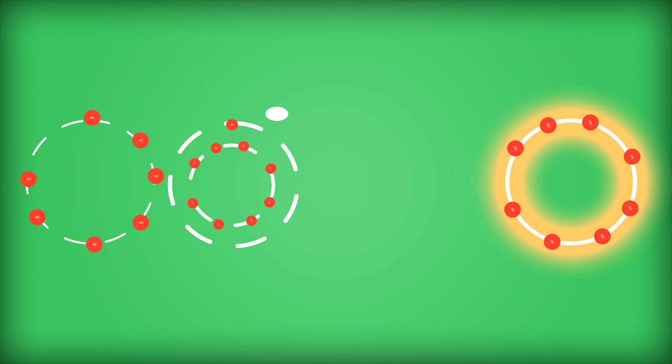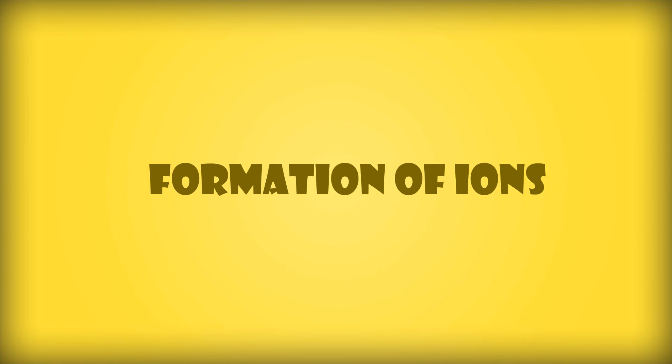Now atoms undergo bonding to do one thing, and that is to achieve a full outer shell—that is, to have eight electrons in the outermost shell. This is what drives all chemical reactions, and all these valence electrons move about to help atoms achieve this configuration, known as the octet rule. Atoms like the noble gases already have this configuration, thus tend to be very unreactive.